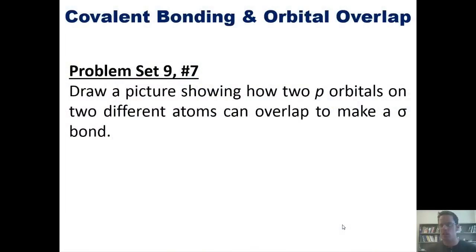That brings us to a problem. I want you to draw a picture showing how two p orbitals on two different atoms can overlap to make a sigma bond. I'm not going to answer this for you because essentially it looks just like the Cl2 orbital diagram that I just showed you. But if you'd like, I invite you to try it on your own.